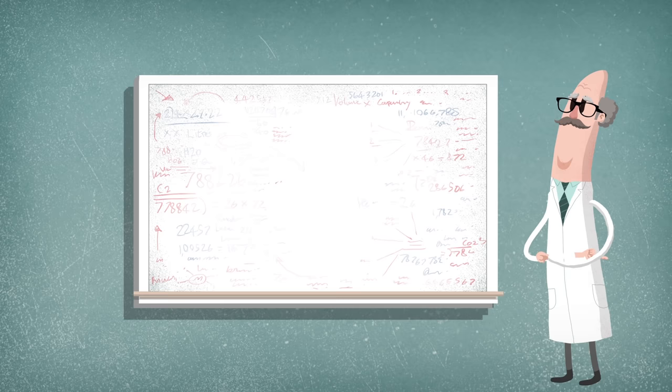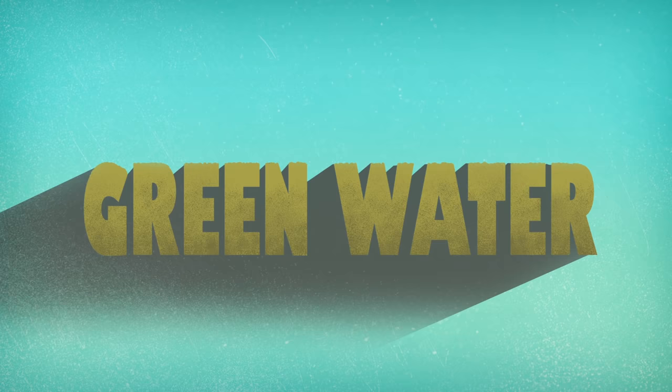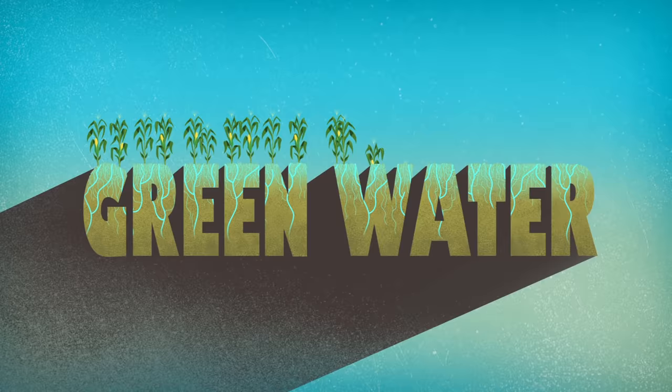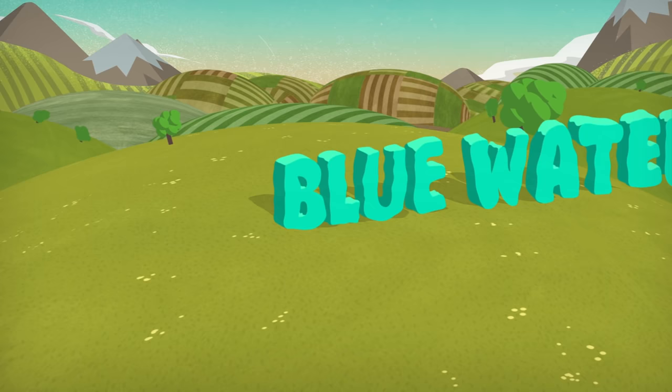Two terms have been coined to refer to the water used by agriculture: blue water and green water. When rain falls over a field, some of that water gets stored in the upper soil as moisture. This is called green water and accounts for most of the water used in agriculture.